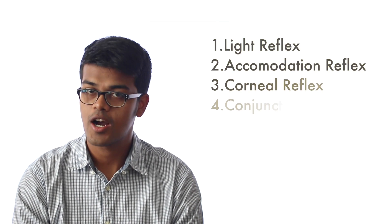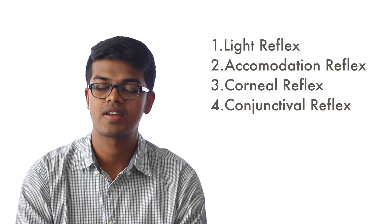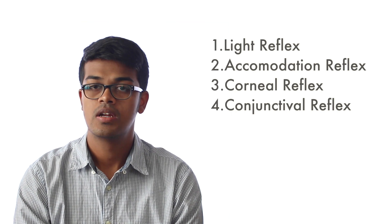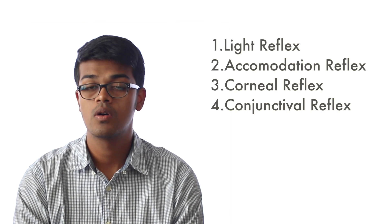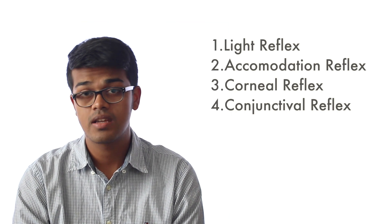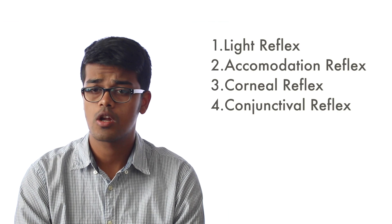There are four reflex pathways in the eye: the light reflex, the accommodation reflex, the corneal reflex, and the conjunctival reflex. Today in this video we are going to talk about the light and the accommodation reflexes and their anomalies.